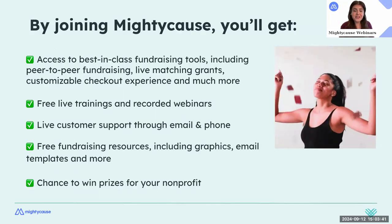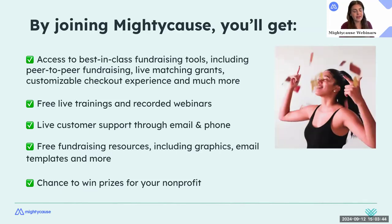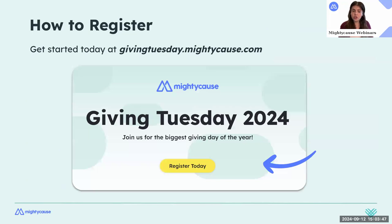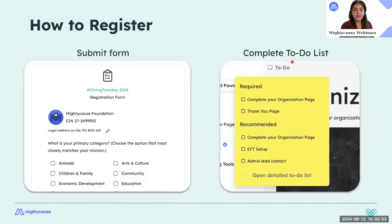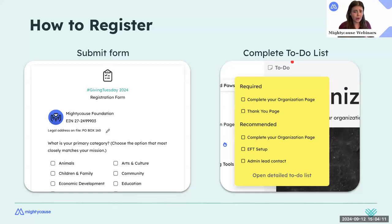To register for our event, go to givingtuesday.mightycause.com, click the Register Now button, and there are just two steps. You'll fill out a simple form — it takes two minutes — and then complete a brief to-do list on your organization page, which is just adding your logo, a banner image, and a description of your nonprofit. That takes about two to three minutes, and then you'll get auto-approved for Giving Tuesday on Mighty Cause.